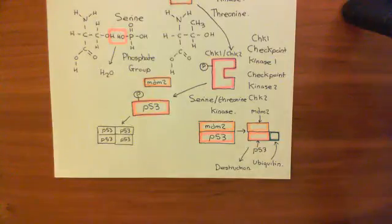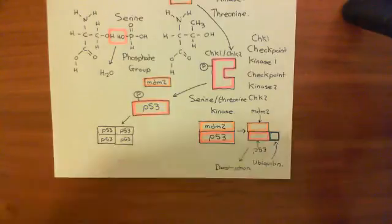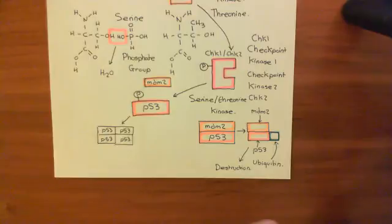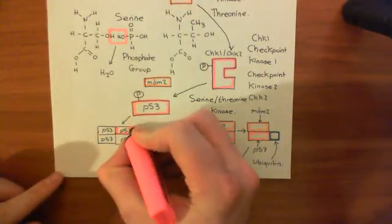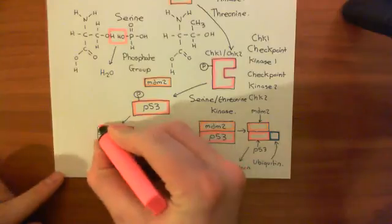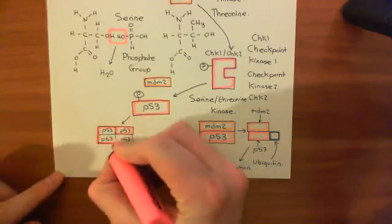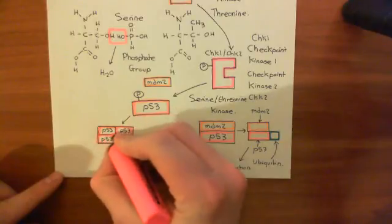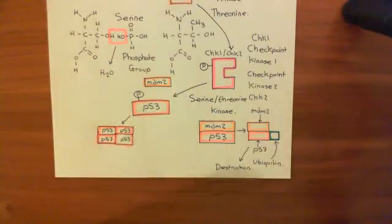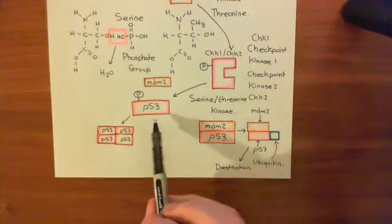Welcome to this next video on P53 and the response to DNA damage. We've so far seen how if DNA damage occurs to a cell - maybe a mutation happens, maybe some sort of chemical insult to the DNA happens, or in our case we've looked at radiation causing a double-strand break of the DNA - what it's going to lead to is the activation of P53.